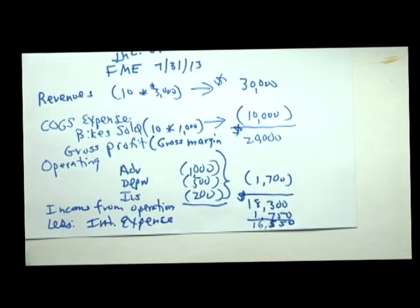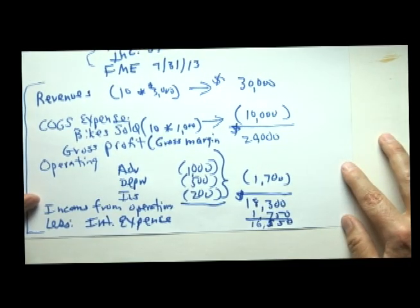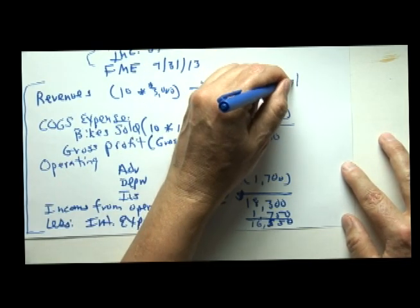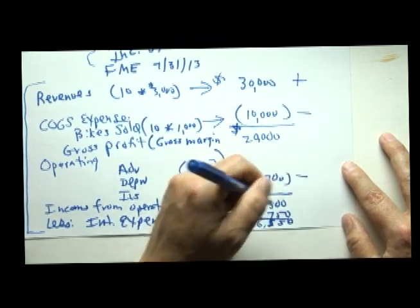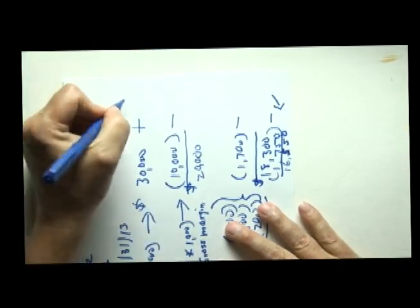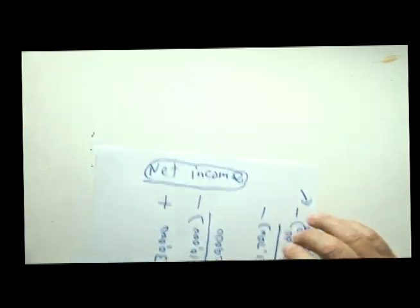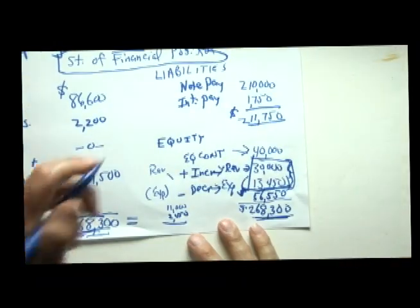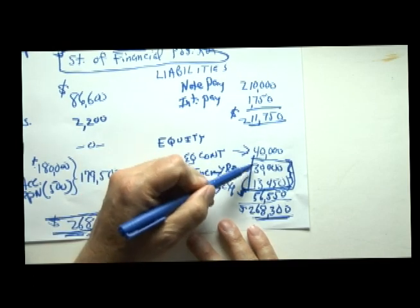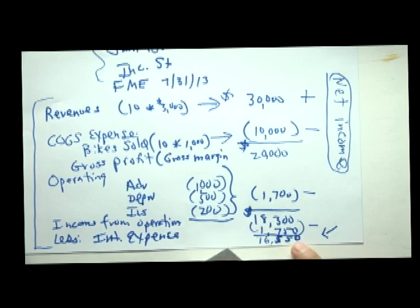In summary, the income statement is merely a formal formatting of all changes in equity earned. Revenues increase equity earned; expenses reduce equity earned. The bottom line number is called net income. The net income number, which reflects all changes in equity, will also be shown on your balance sheet after equity contributed. Revenues less expenses equals $16,550, which exactly equals that number. This concludes Video 10.